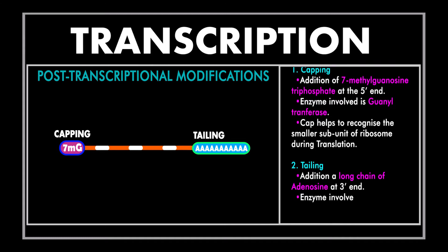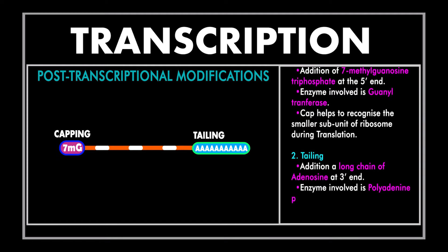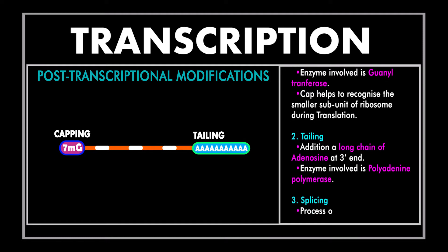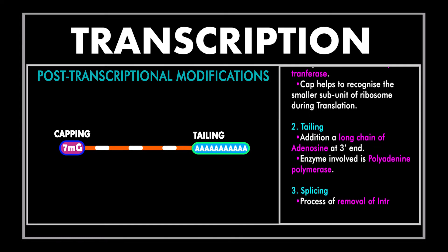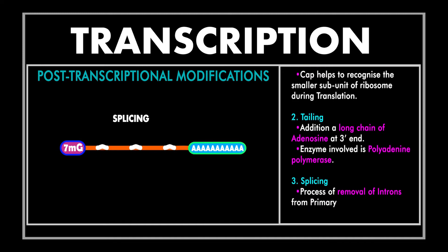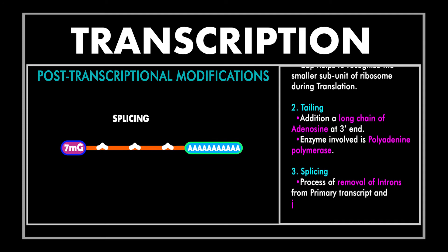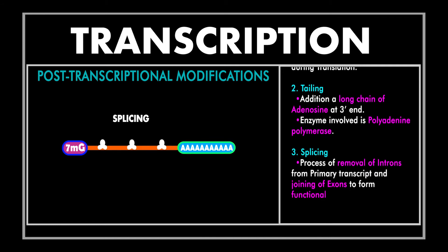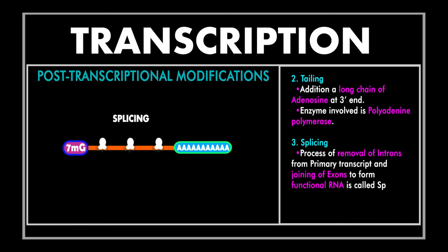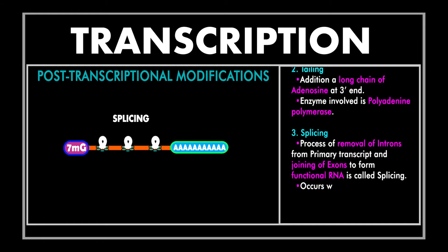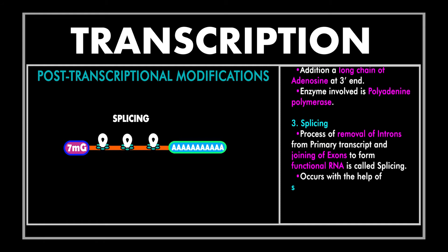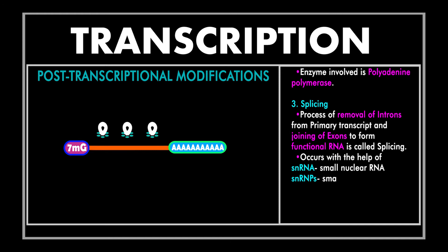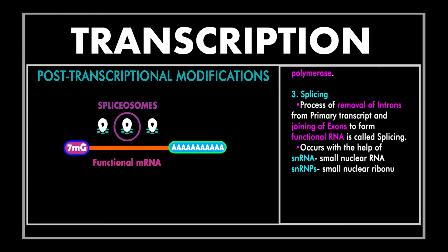The last step is splicing. The primary transcript contains both functional and non-functional regions, and is therefore also called heterogeneous nuclear RNA or hnRNA. Splicing is defined as the process of removal of introns from the hnRNA to form a functional mRNA having only exons. This is performed with the help of small nuclear RNAs called snRNAs and small nuclear ribonucleoproteins called snRNPs. Both snRNA and snRNPs recognize the ends of introns and bind to them, resulting in the formation of a complex called the spliceosome. Introns are then cut and removed, while all the exons are joined by DNA ligase to form a functional mRNA.